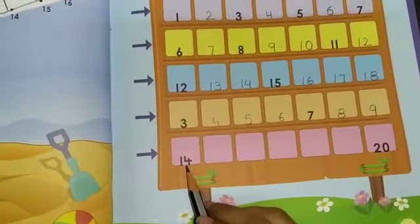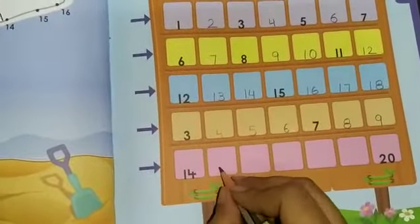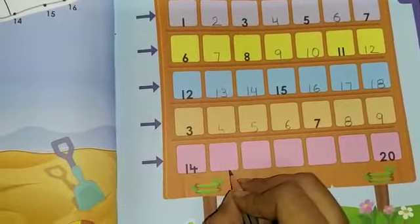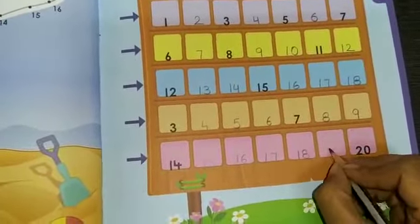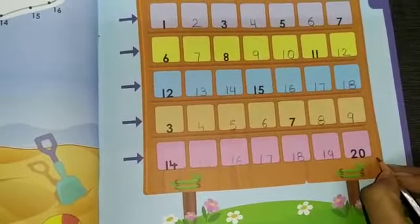Now here the number is written 14. After 14 which number will come? 15, 16, 17, 18, 19, 20.